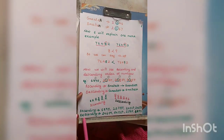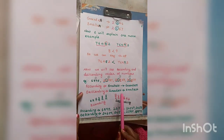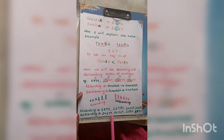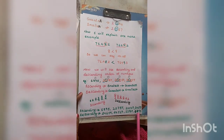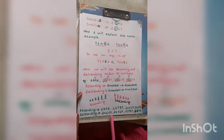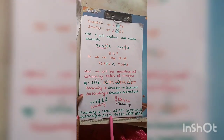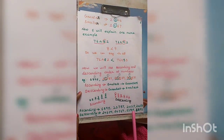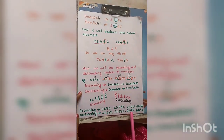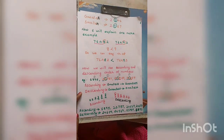Next is descending order. In descending order, you have to write the greatest number first, then arrange the numbers accordingly — greatest number, then the smaller numbers in order.